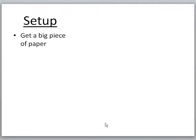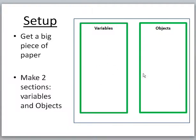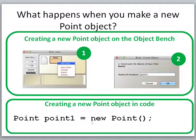All right, so to begin, get a big piece of paper and make two sections on the piece of paper. You're going to call one of them variables and one of them objects.